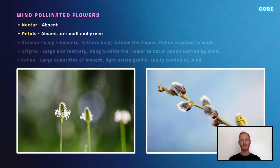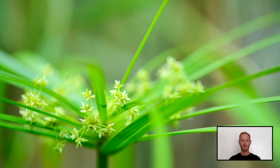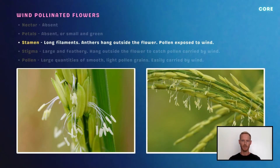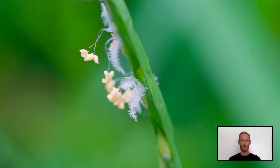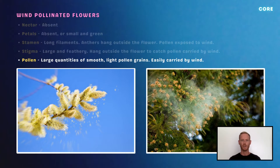Wind-pollinated plants have no need to attract insects and therefore don't produce nectar. For the same reason, petals are either absent or small and inconspicuous. Stamens have long filaments with anthers that hang loosely outside the flowers. The exposed anthers swing freely in the wind, releasing large quantities of pollen. The stigmas of wind-pollinated plants also hang outside the flower; they are feathery with a large surface area to catch pollen grains carried by the wind. Finally, wind-pollinated plants produce large quantities of pollen; grains are small, light and smooth, which helps them to stay suspended in the air.